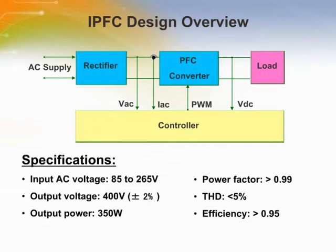A power factor correction block diagram can be divided into three main blocks. First, the rectifier, which provides DC voltage to the power factor correction converter stage. Next is the power factor correction converter itself, which provides control over the current shape and phase lag while regulating the output voltage. Finally, it is the controller block. The power factor correction converter can be implemented using different circuit topologies, each with their advantages and disadvantages.